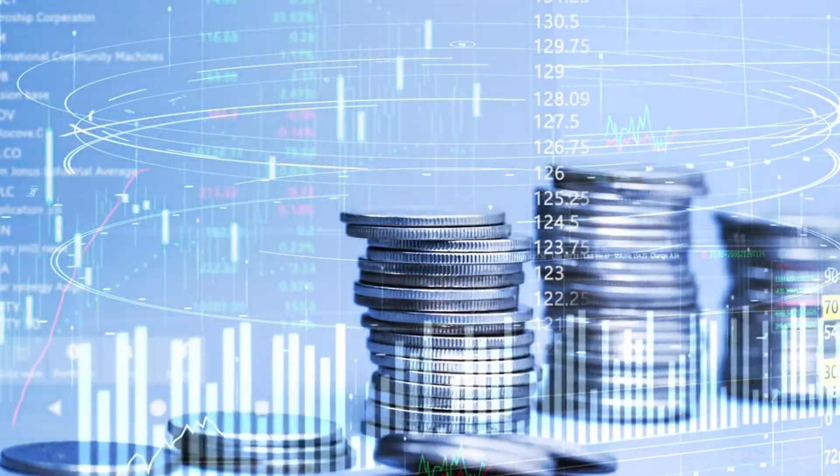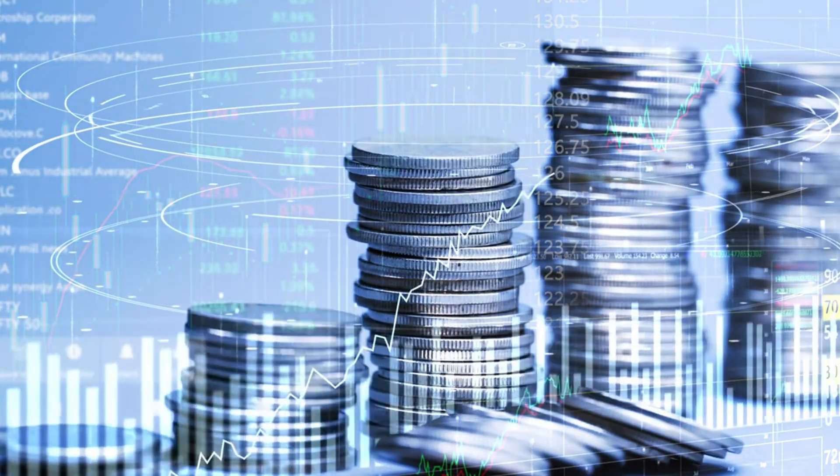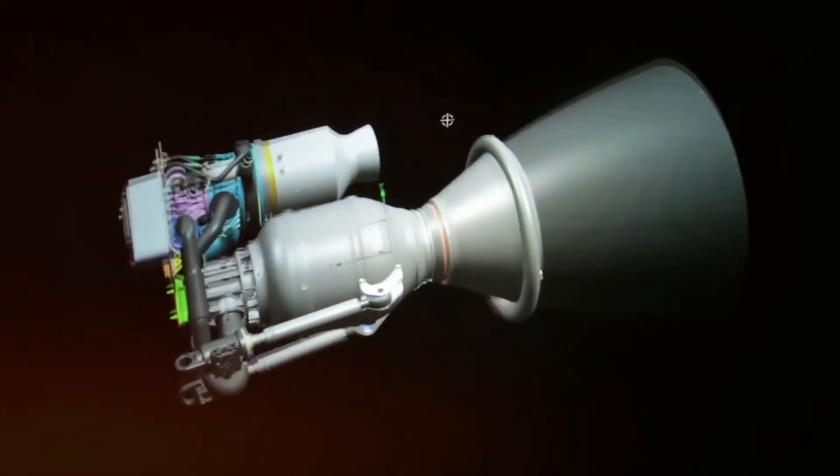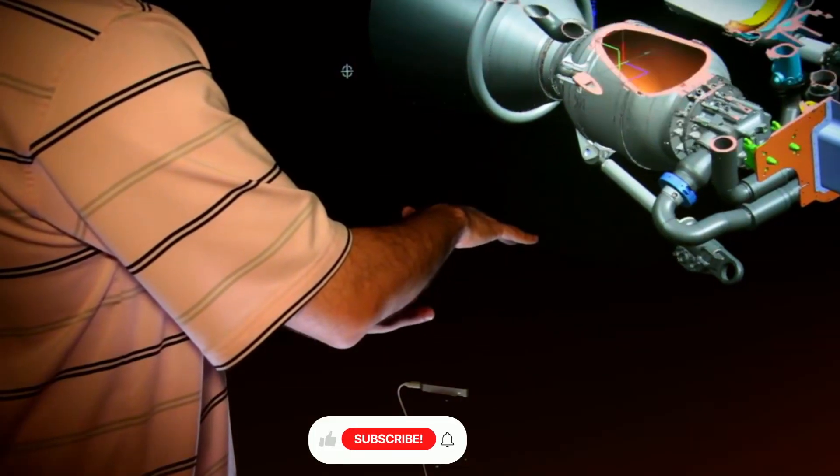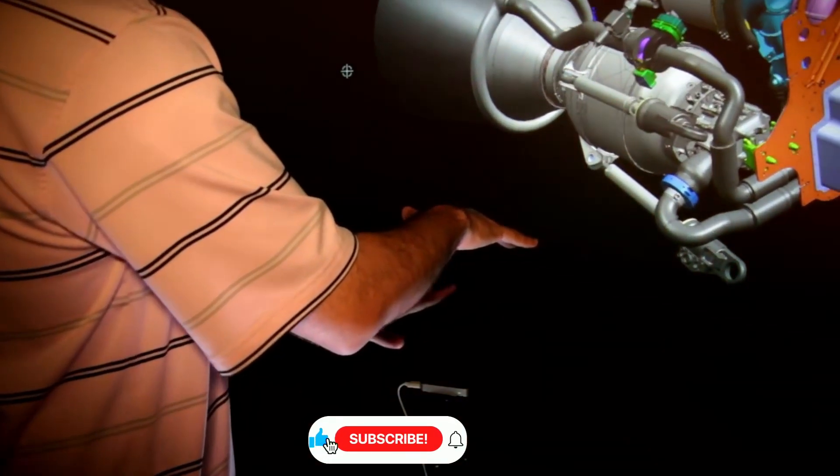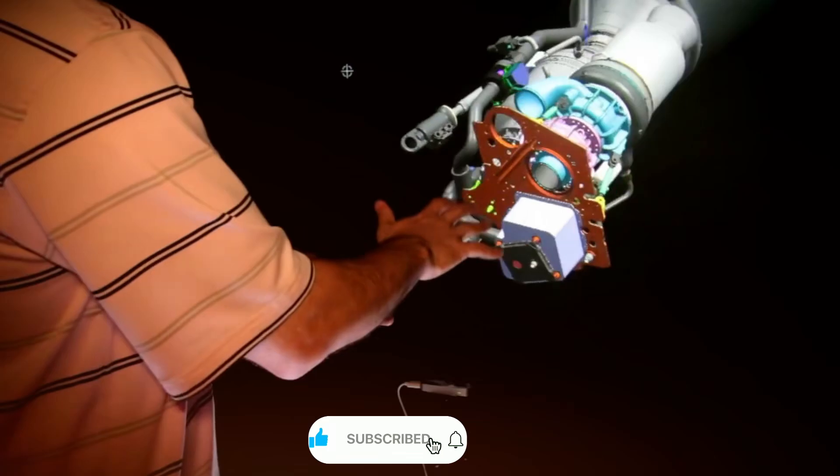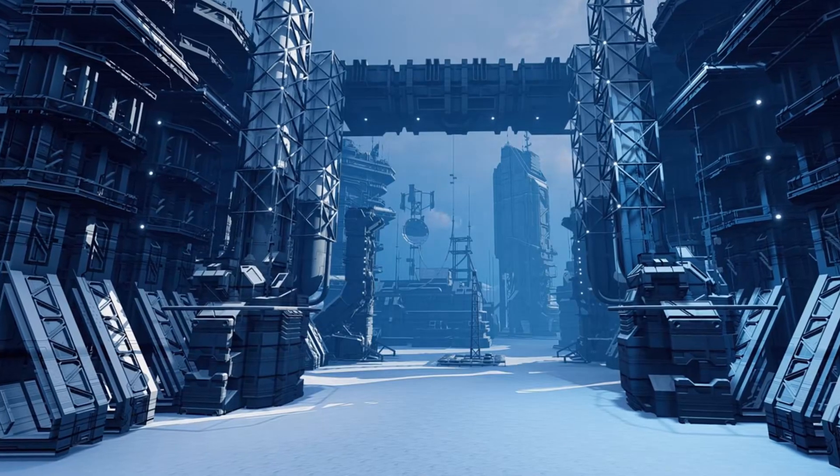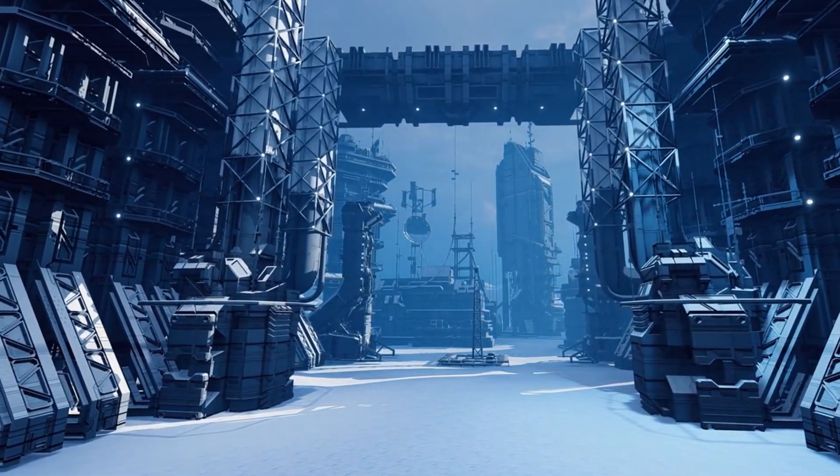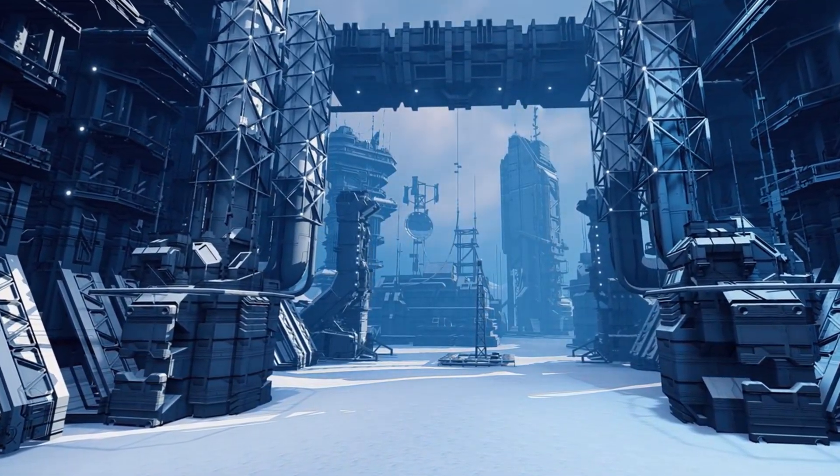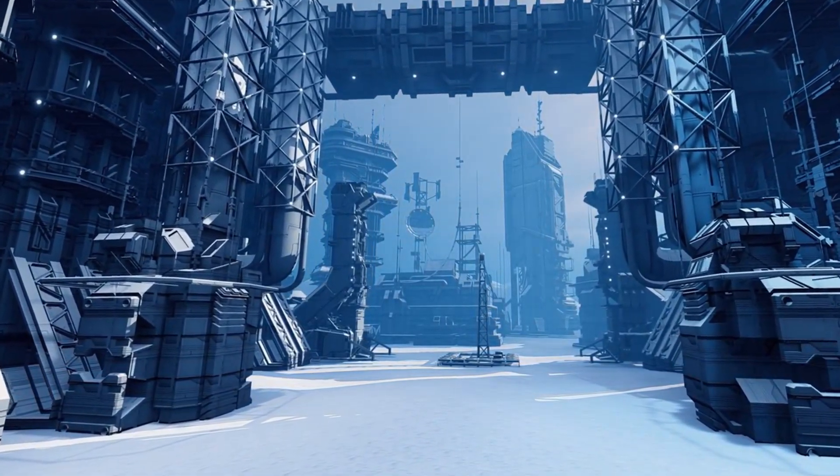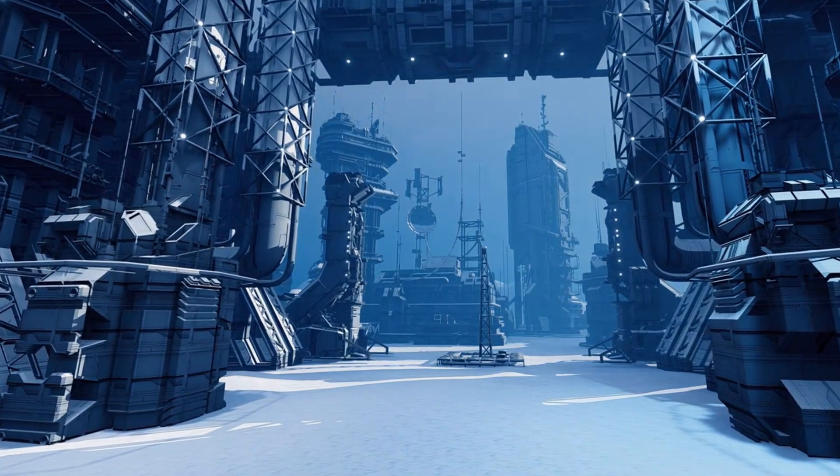This manufacturing efficiency translates directly to cost savings. While early Raptor engines cost upwards of two million dollars each, the simplified design and streamlined manufacturing process of Raptor 3 promised to drive costs down to unprecedented levels. When scaled for mass production, each engine could cost as little as $200,000, a 90% reduction that fundamentally changes the economics of space access.